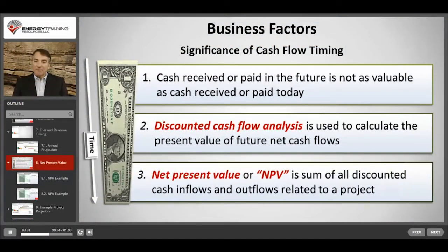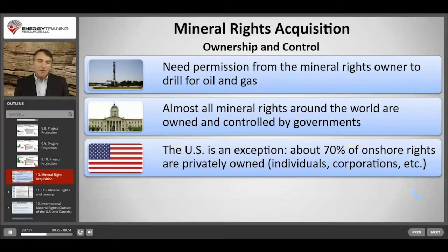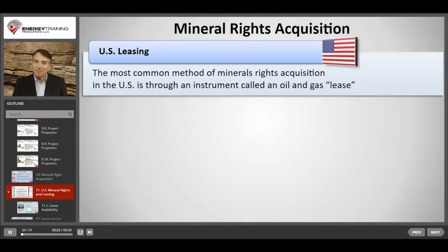Net present value, or NPV, is the sum of all discounted inflows and outflows related to a project. NPV is important in oil and gas because generally the costs are paid mostly up front and the revenues are received over time, often over 20 years or more. In the US, about 70% of the onshore mineral rights are privately owned. The most common method used by oil and gas companies to acquire mineral rights from mineral rights owners is using an instrument called an oil and gas lease.